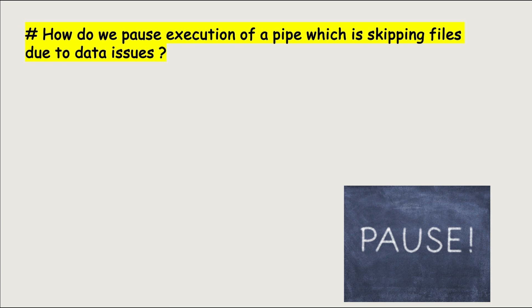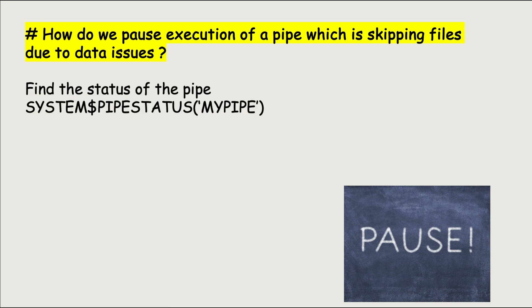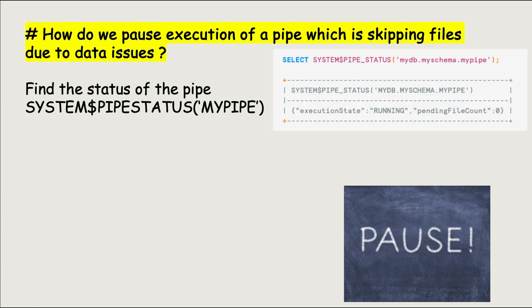So the first step for me was to determine the current state of the pipe. We can verify the status of a pipe by running the pipe status command. This command will let you know what the execution status of the pipe is. If the state of the pipe is running, what we need to do is change it to paused so that we can save credits.